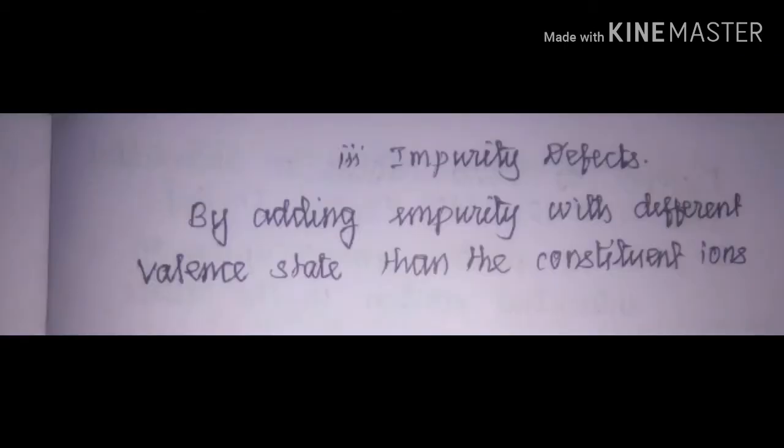Impurity defect is the third type of defect. In this defect, a cation or an anion with a different oxidation number is added to the crystal, creating this type of defect.